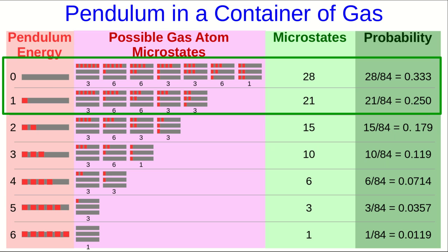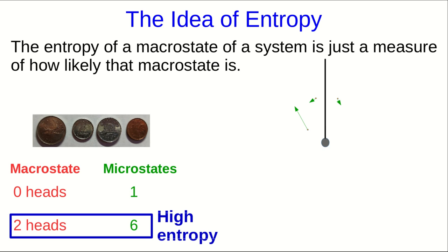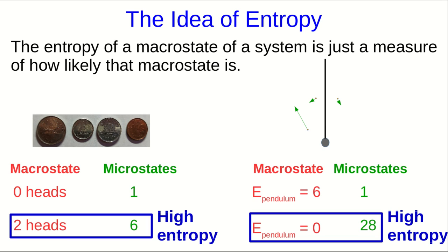Those states where the pendulum has a lot of energy are so unlikely, they will never occur without someone doing them deliberately. This is fundamentally the meaning of entropy. It is just a measure of how likely a macrostate is. So for our system of coins, the two heads state is the highest entropy state of that system. And for our system of the pendulum in the gas, our macrostate with zero energy in the pendulum is the highest entropy macrostate.